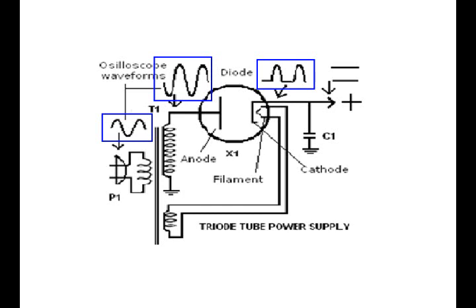Looking at waveforms: this incoming waveform is AC. One waveform is lower in amplitude and one is higher in amplitude, as seen on the oscilloscope. AC that's been converted into DC is still pulsating DC, but it is DC. Once it's filtered by the capacitor, it becomes pure DC.